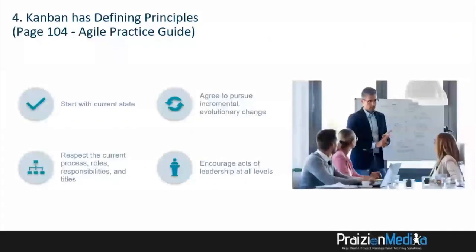Moving on to number four: Kanban has defining principles, talked about on page 104 in the Agile Practice Guide. One: start with the current state. Two: agree to pursue incremental evolutionary change. Three: respect the current process, roles, responsibilities, and titles. And four: encourage acts of leadership at all levels.